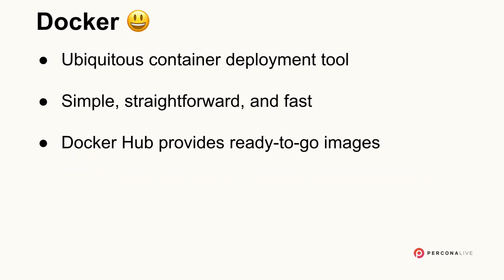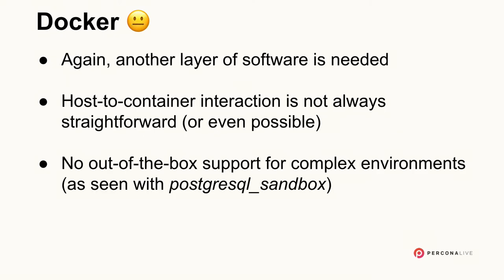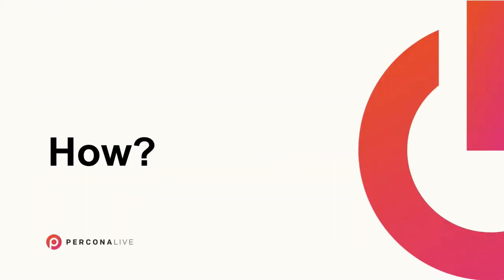The good thing about Docker is that it's everywhere nowadays — you're probably already familiar with it and have run it at least once. It's simple to use and we have available images to download with 'docker pull', or even 'docker run' will do it for you. On the other hand, we have another layer of software with its own complexities and potential bugs. The host-to-container interaction isn't always ideal — for example, running flame graphs inside a container was almost impossible. And there's also no support for replication or HA environments.